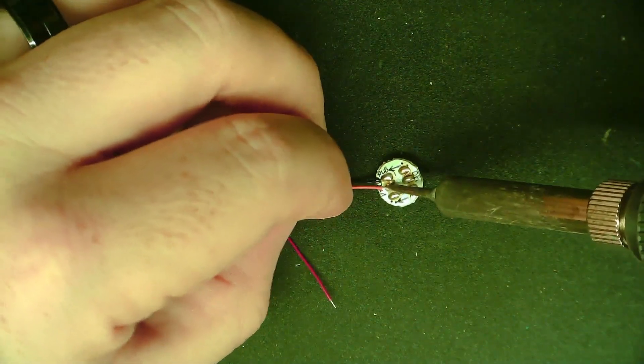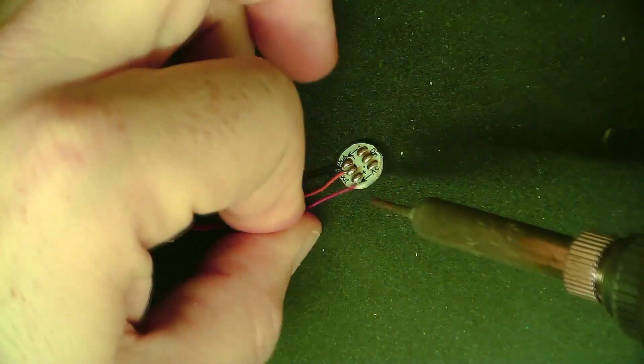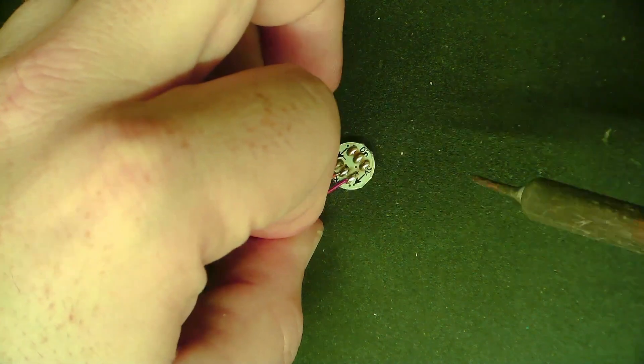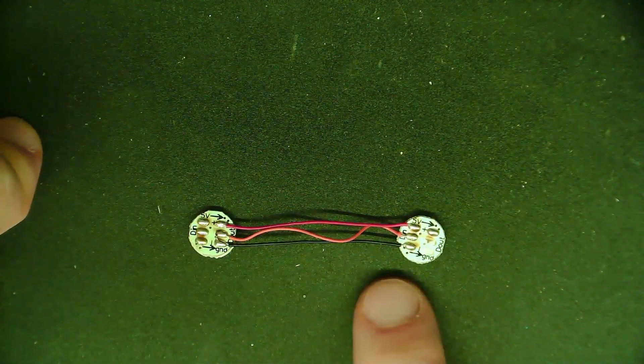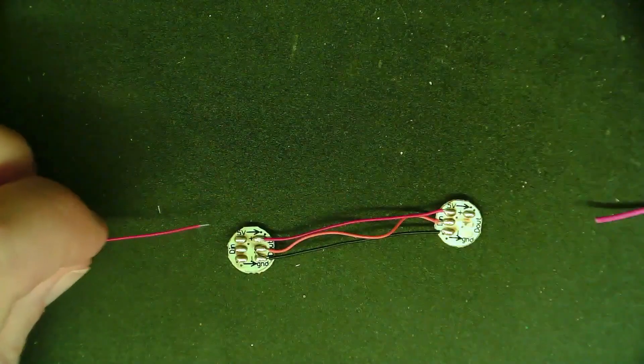In this example, I'm daisy chaining the power, five volt and ground through the boards. However, in my actual implementation, I ended up taking a separate five volt and ground from my Carnarvon board. It doesn't really make that much difference.